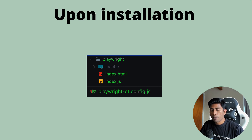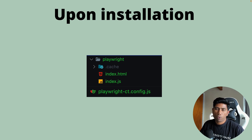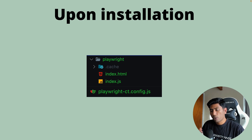You're going to have a Playwright folder and a cache folder. Inside the cache folder there will be an index.html file and an index.js file, and also a playwright-ct.config.js file. These are four or five different files added as part of the init, and they are very important for component testing.